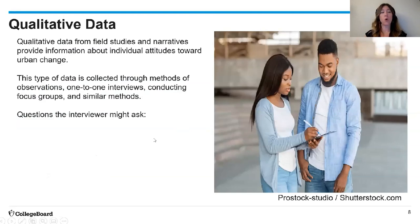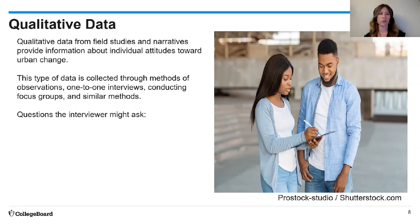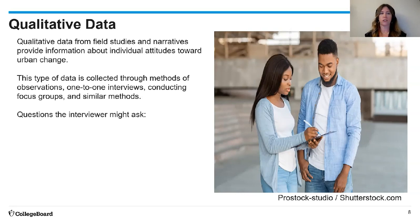Now let's look at some qualitative data. Qualitative data is information you get by asking questions or going out in the field and getting impressions. Field studies and narratives provide information about individual attitudes towards urban change. You can do this through observation, one-on-one interviews, or focus groups.